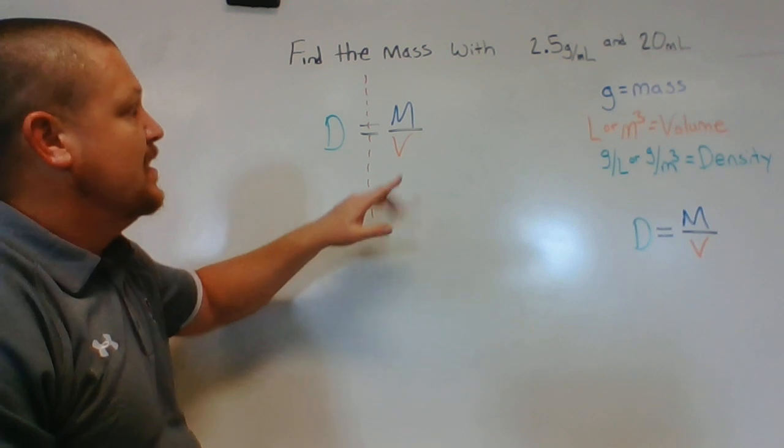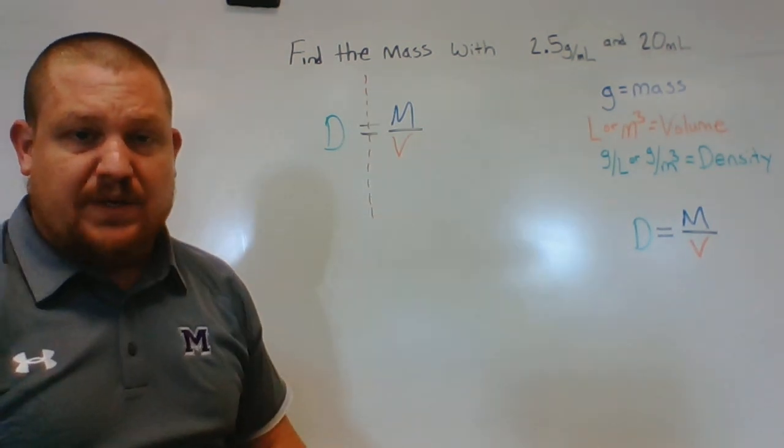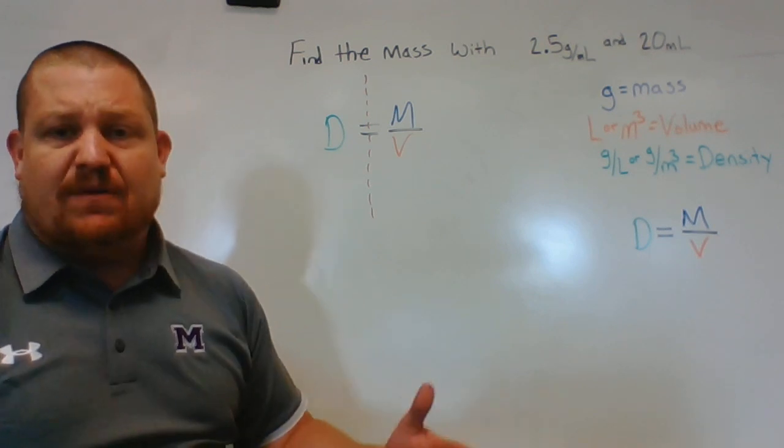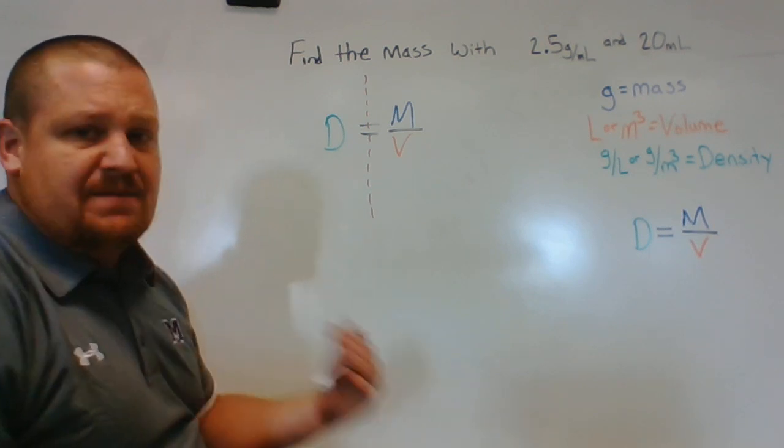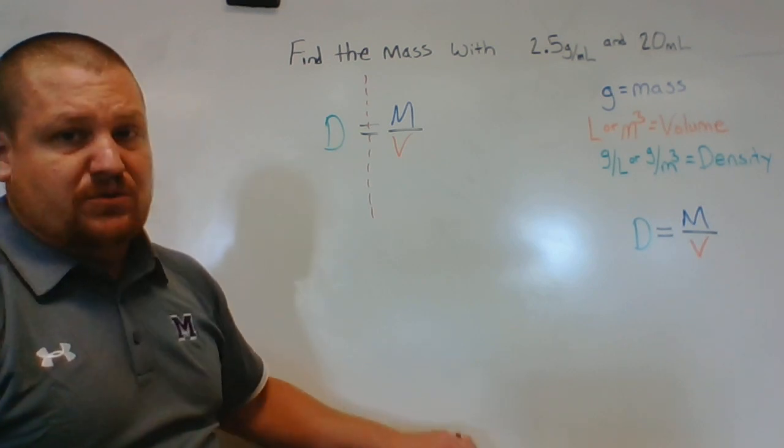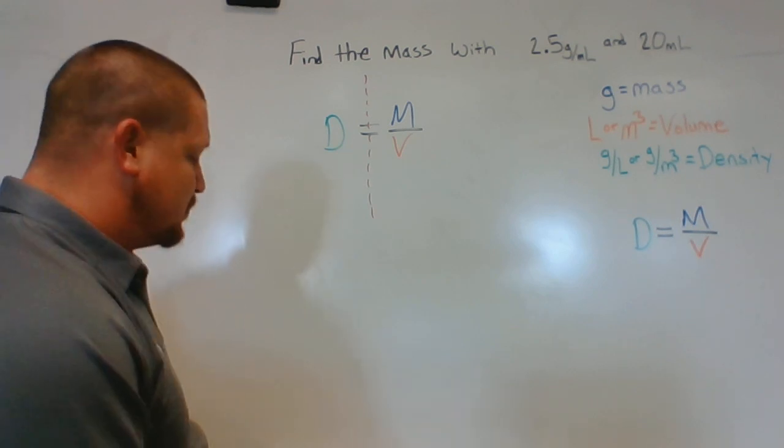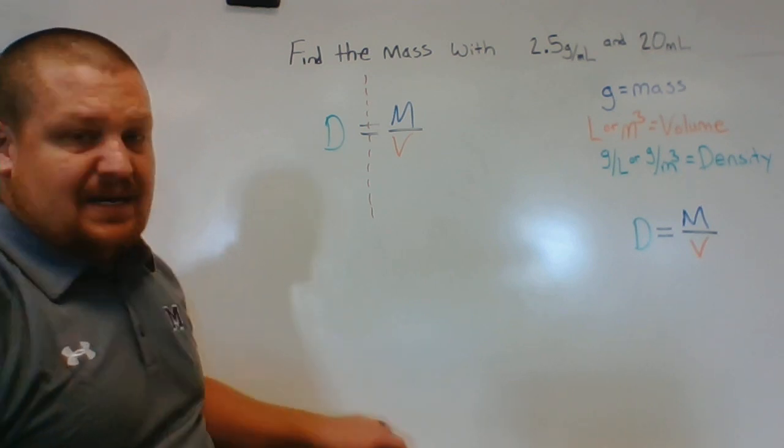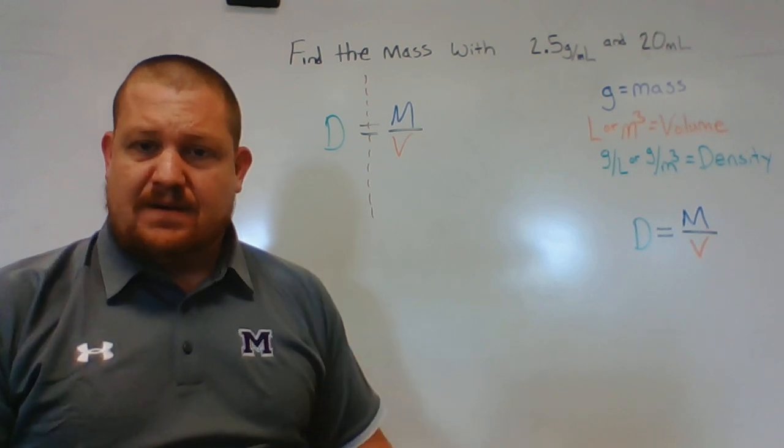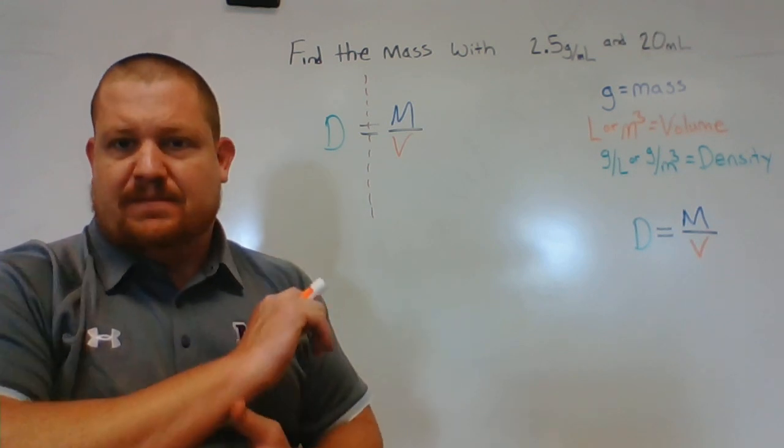What I mean by that is we need M to be either on this side of the equation with nothing else, kind of like the D is right now, or this side of the equation with nothing else with it. Right now our mass has a volume on the same side, so it's not ready to solve. So we need to move some stuff. We need to work through our equation, follow our rules until we get to that point.